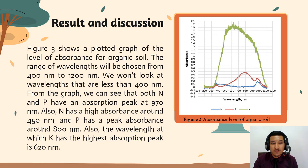Figure 3 shows a plot graph of the level of absorption of the organic soil sample across a range of wavelengths, from 400 nm to 1200 nm. We won't look at wavelengths less than 400 nm. From the graph, we can see that both N and P have an absorption peak at 970 nm. Also, N has high absorbance around 450 nm and P has a peak absorbance around 800 nm.